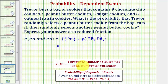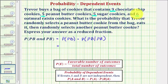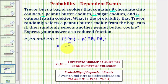The probability compares the favorable number of outcomes to the total number of outcomes. The total number of cookies is nine plus five plus five plus six, which equals twenty-five total cookies. So the probability of selecting a peanut butter cookie the first time, since there are five peanut butter cookies, would be five twenty-fifths.